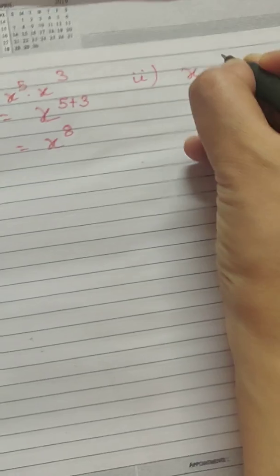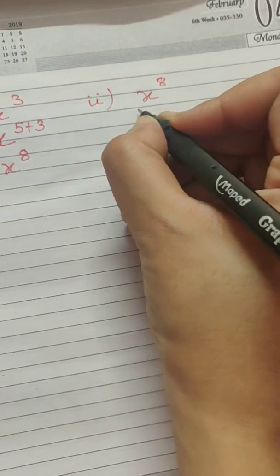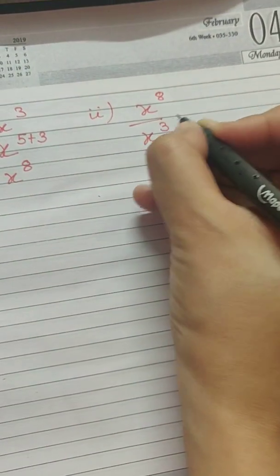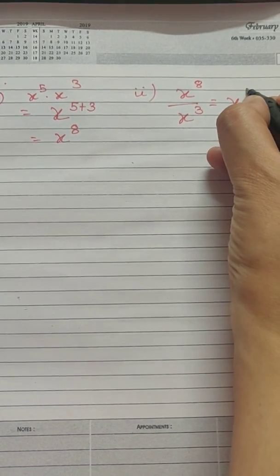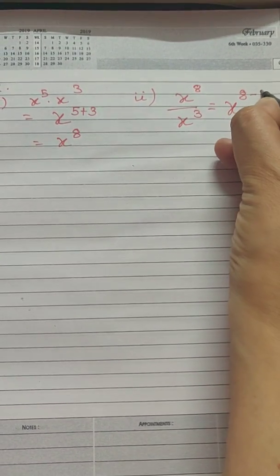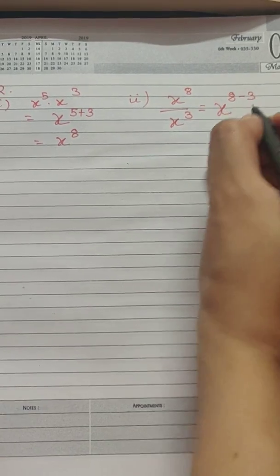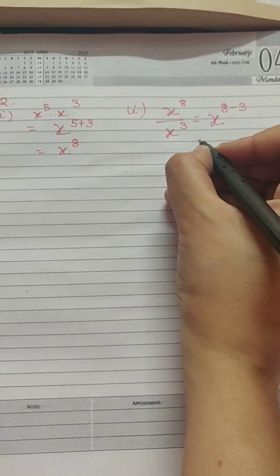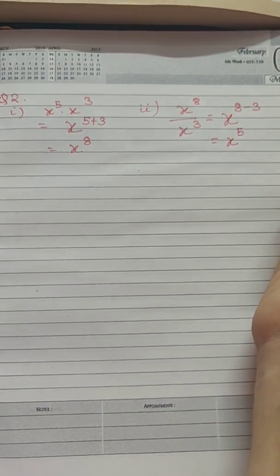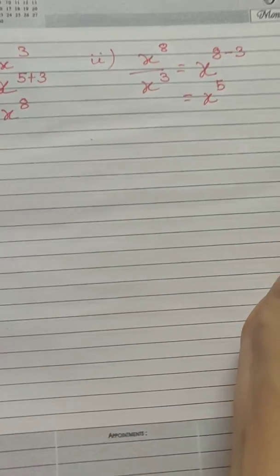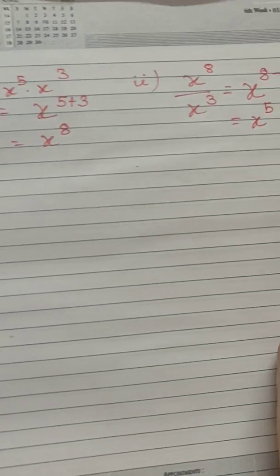I will show you one with division also: x to the power 8 by x to the power 3. Here again the exponents are different but the bases are same. So what we do here is keep the exponent as it is, and as the law for division states, we have to subtract the exponents. So we subtract the exponents and we get x to the power 5. This is again a pretty basic sum. I hope you don't have any problem in understanding.